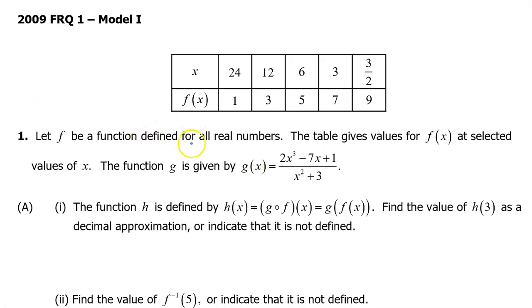Let f be a function defined for all real numbers. The table gives values of f of x at selected values of x. The function g is given by g of x equals this expression. Part A.1: The function h is defined by h of x equals g of f of x. Both of these notations mean exactly the same thing.